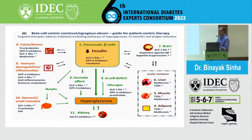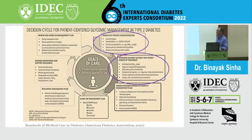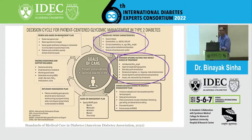When managing a chronic condition, we try to address the pathophysiology. Looking at the 11 egregious defects of diabetes, most of them are addressed by DPP-4 inhibitors and a combination with metformin, which addresses the insulin-resistant side. We also need to look at specific factors like HbA1c targets, weight, blood pressure, and lipids, as well as coexisting diseases and preventable conditions such as kidney disease and liver disease.